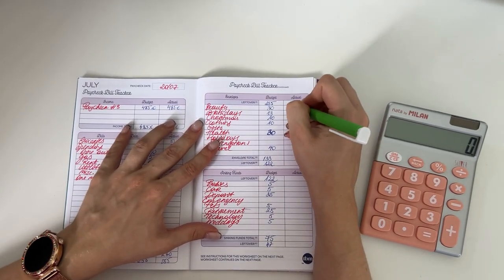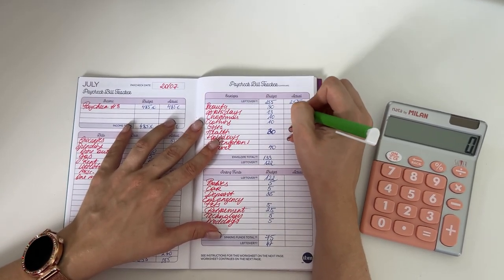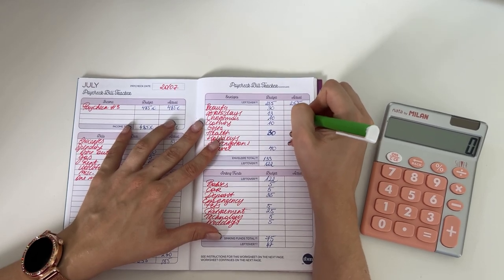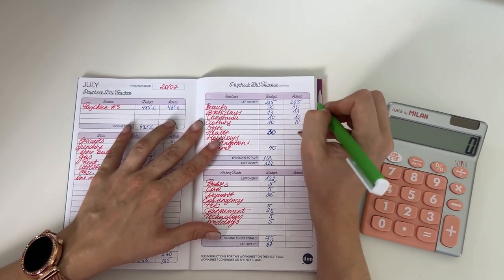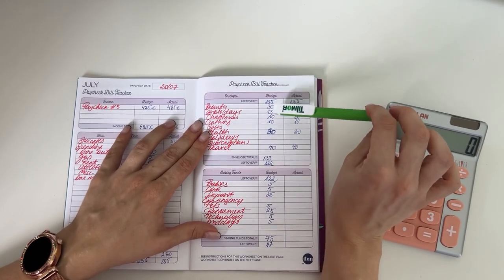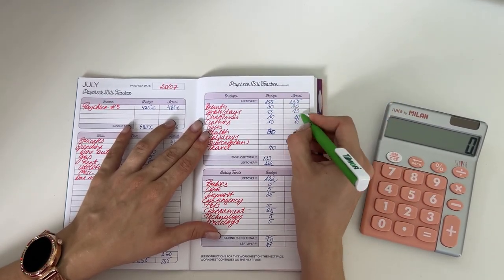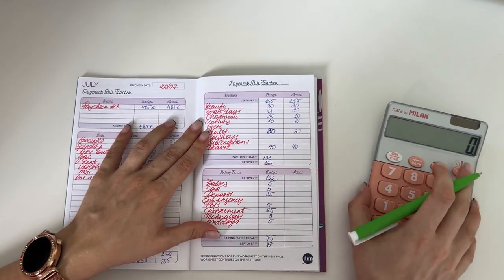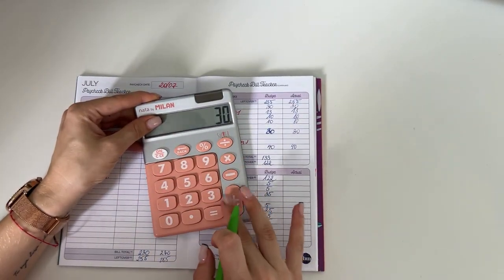We had 30 go into beauty, 13 into birthdays, 10 in clothing and Christmas, 30 into health, and 40 in travel. 13 went into birthdays because we had a weird amount in there and we needed to finalize it. In total we had 133 go into short-term sinking funds.